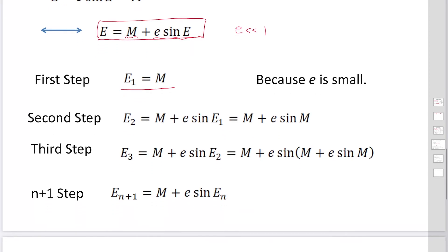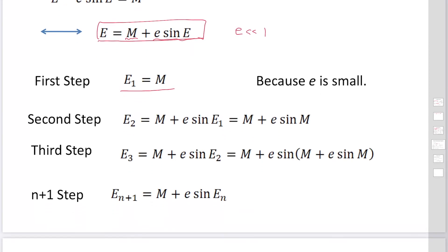But in this situation, there is no contribution from the second term. So to improve the solutions, we substitute this approximate solution to the original equation. To find the second approximate solution, E sub 2 is M plus E times sine E sub 1. So this is going to be M plus E sine M. And we have discovered the second step approximate solutions.